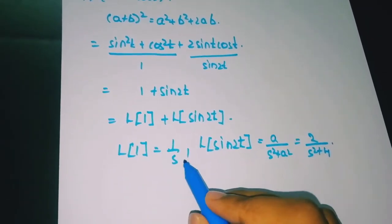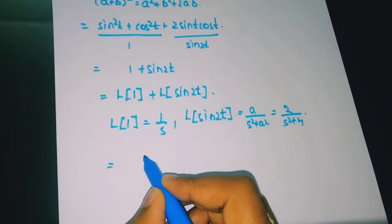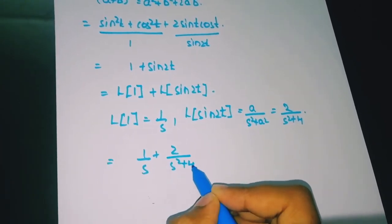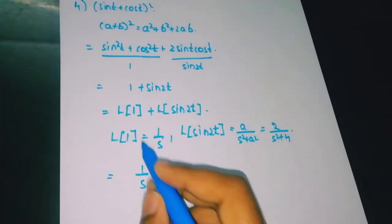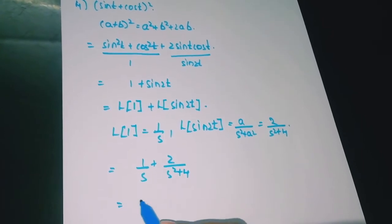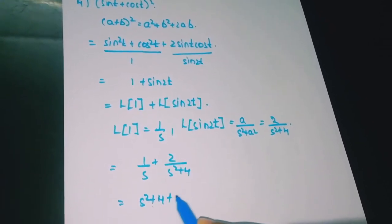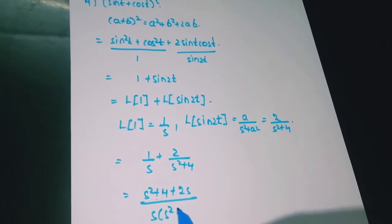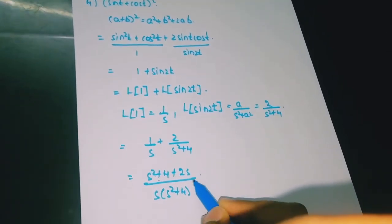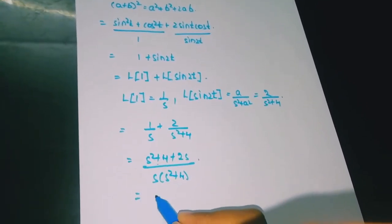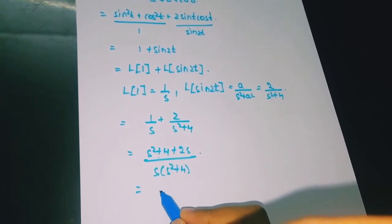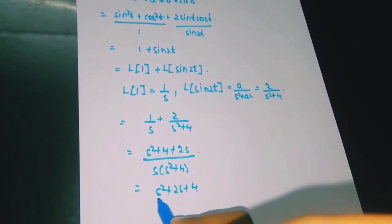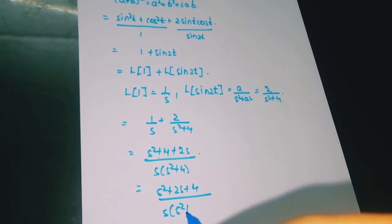Substituting the values: 1/s + 2/(s² + 4). After cross multiplication: (s² + 4 + 2s) / [s(s² + 4)], that is (s² + 2s + 4) / [s(s² + 4)].